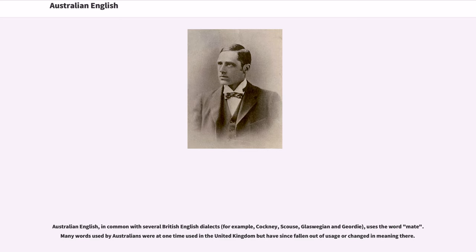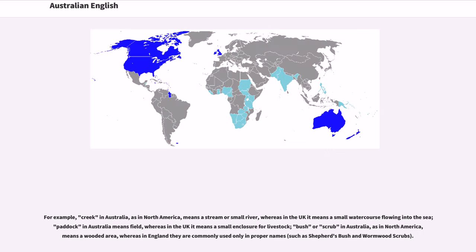Many words used by Australians were at one time used in the United Kingdom but have since fallen out of usage or changed in meaning there. For example, creek in Australia, as in North America, means a stream or small river, whereas in the UK it means a small watercourse flowing into the sea. Paddock in Australia means field, whereas in the UK it means a small enclosure for livestock. Bush or scrub in Australia, as in North America, means a wooded area, whereas in England they are commonly used only in proper names, such as Shepherd's Bush and Wormwood Scrubs.